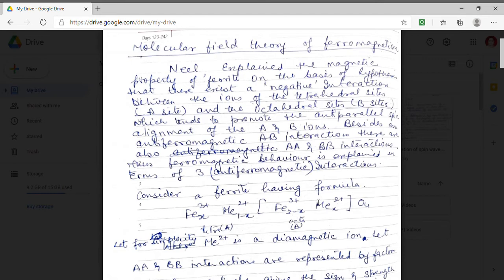And on octa site we have iron with the composition 2-X and it is trivalent iron. And on this octa site there is a divalent metallic iron with the concentration X. This is the general formula for a ferrite. The brackets around these two ions denote that it is an octahedral site.